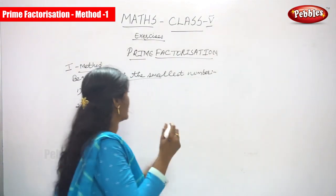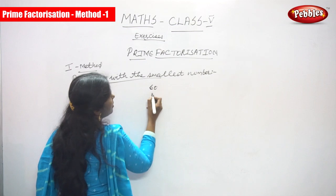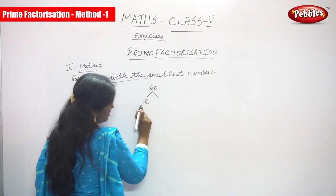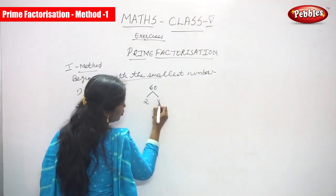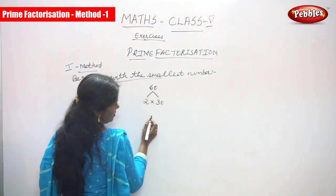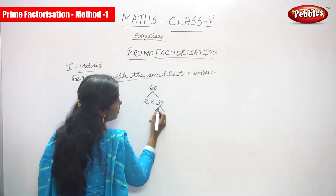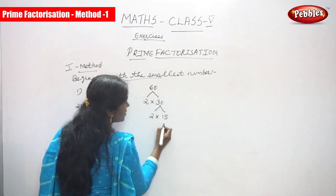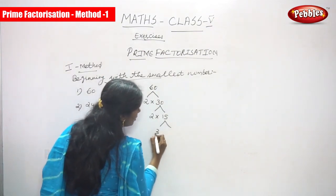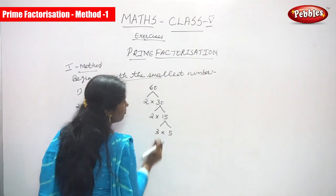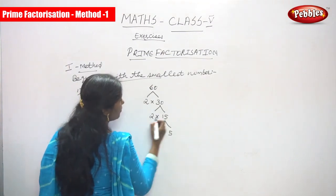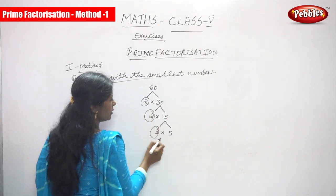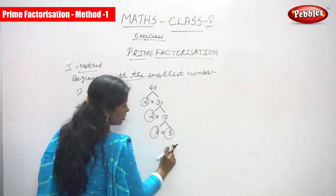The first question is 60. Take the smallest number, which is 2 — it is also a prime number. 2 into 30 gives 60. Then bring down 30: 2 into 15 gives 30. Then factorize 15: 3 into 5 gives 15. So the numbers are 2, 2, 3, and 5.